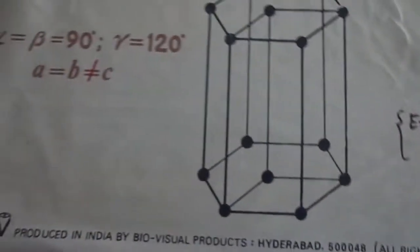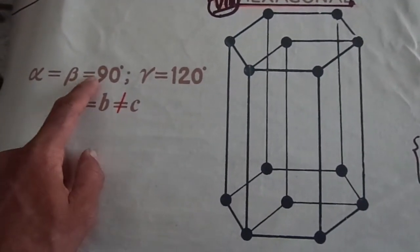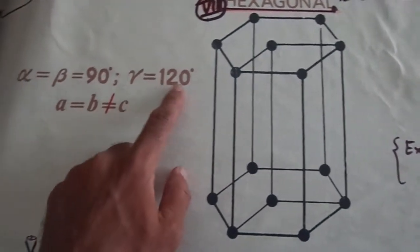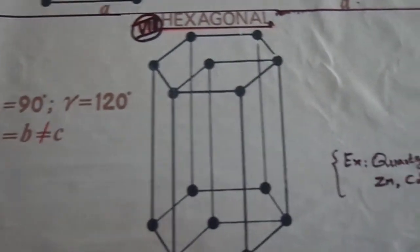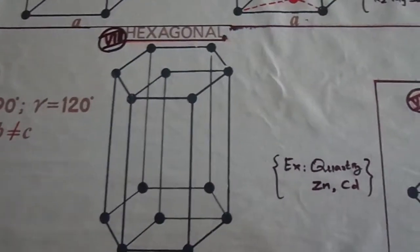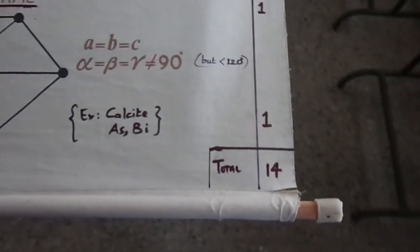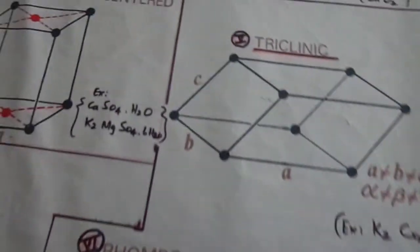Then the seventh one: hexagonal crystal structure. Alpha is equal to beta equal to 90 degrees, but gamma is 120 degrees. A is equal to B, which is not equal to C. The hexagonal structure and its example are shown, and this also makes one type. Put together, these create 14 — the 14 crystal systems of the Bravais lattice system. Thanks for watching.